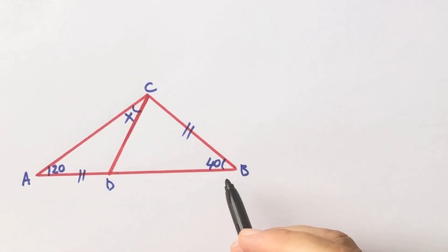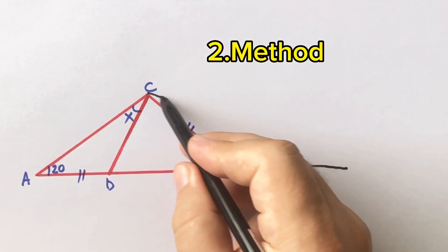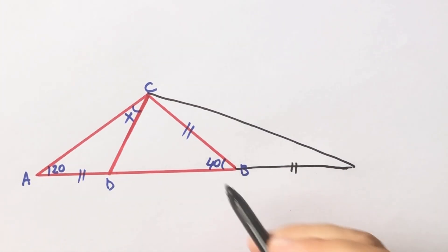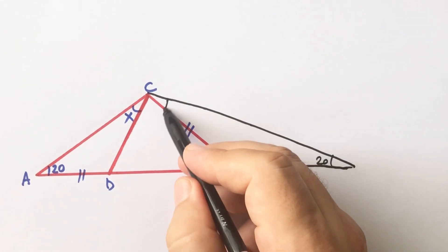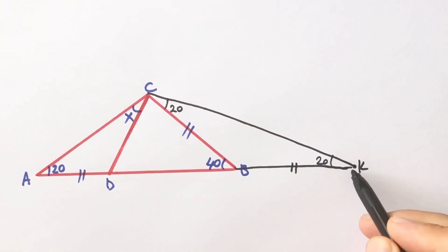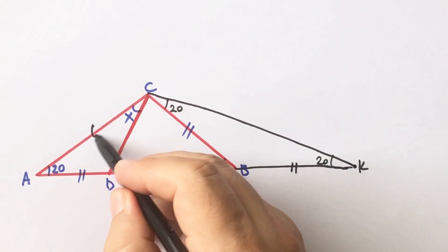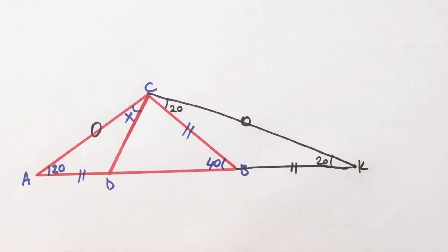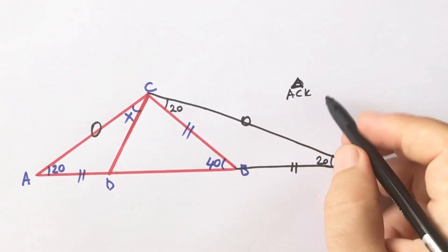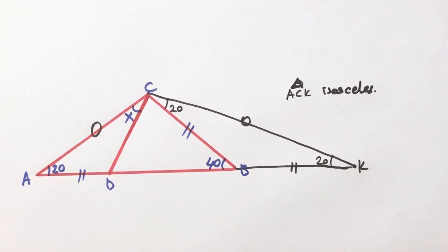Now we will calculate the value of x using the second method. If we extend this side as long as the length of CB, we get an isosceles triangle, so these two base angles must be 20 degrees. Let's call the new point K. If you focus on the biggest triangle, these two sides must be equal because triangle ACK is an isosceles triangle.